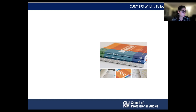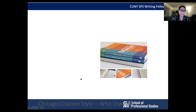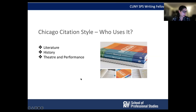APA is the preferred style for most faculty at SPS. However, since this webinar was developed specifically with CUNY SPS Museum Studies students in mind, we are focusing on the Chicago method. This is the style of choice for literature, history, theater and performance, film, visual arts and art history, and other fields in the humanities and social sciences.